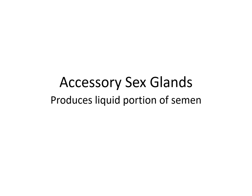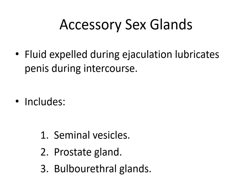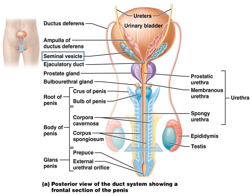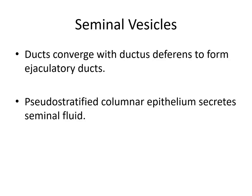The accessory sex glands each produce a portion of semen. The fluid expelled during ejaculation lubricates the penis during intercourse and includes the seminal vesicles, the prostate gland, and the bulbourethral gland. Let's look at the seminal vesicles first. These are paired glands on the posterior surface of the urinary bladder. Here's the seminal vesicle right here, parallel to the ampulla.